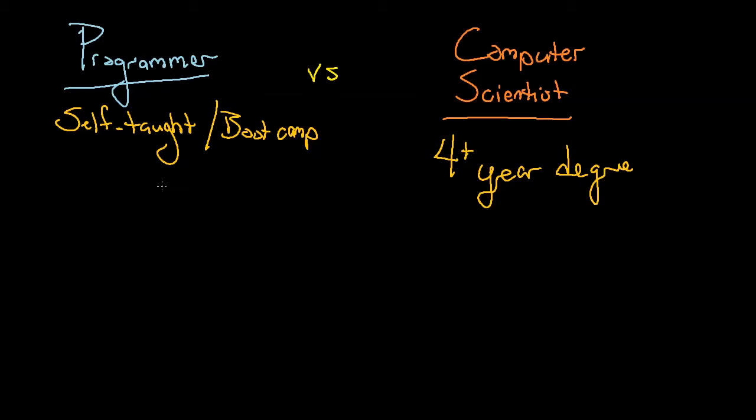A programmer is generally dealing with putting things into practice, actually building software. They deal much more with the practical side of things, while a computer scientist deals with the theory. If you can do the problem on paper, you're doing computer science. If you need a computer, you're a programmer.